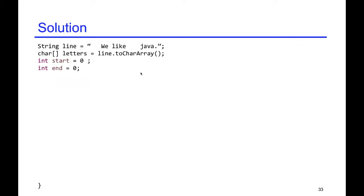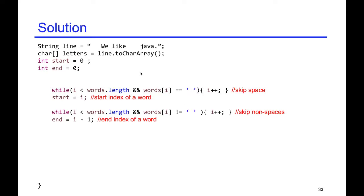Now, let's look at the solution. We use two variables, start and end, to mark the beginning and the end of a word. We use a while loop to skip all the spaces and mark the beginning of a word. We use another while loop to skip all the non-spaces to mark the end of a word.